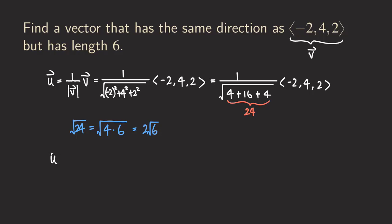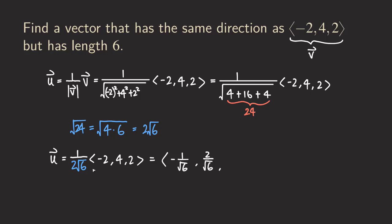So we can rewrite u as equal to one over two square root of six, times the vector v — which is negative two, four, two. Now we distribute the scalar to each component of the vector. The two and the two cancel, giving negative one over square root of six for the x-component. The two and the four cancel leaving two over square root of six. And the two and the two cancel giving one over square root of six. So u is the vector that points in the same direction as v but has length one.